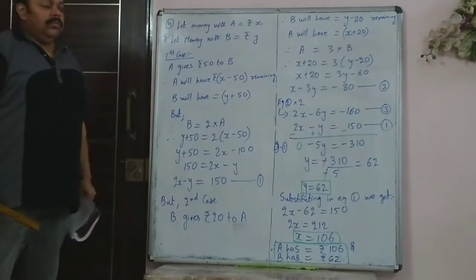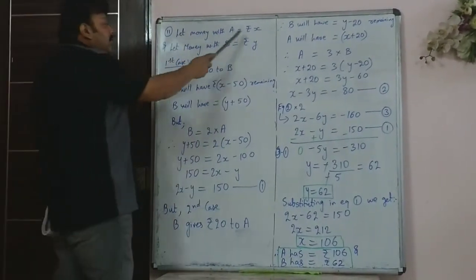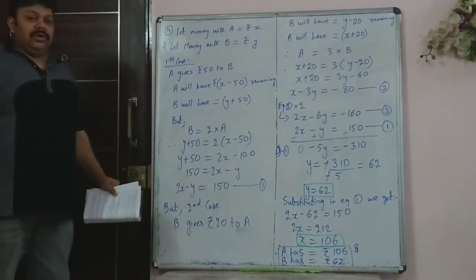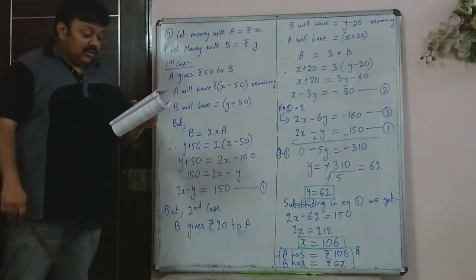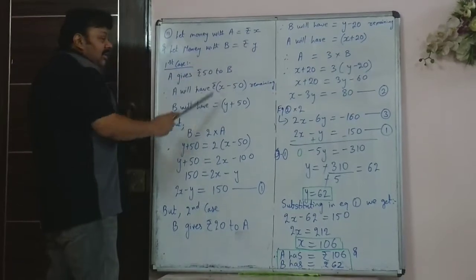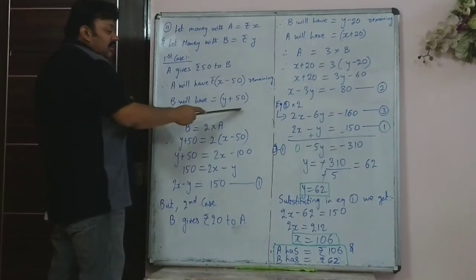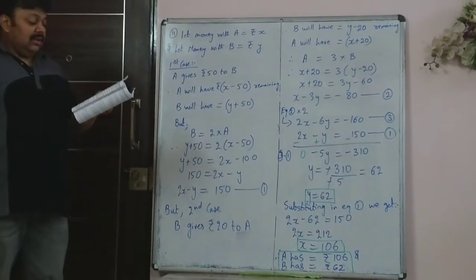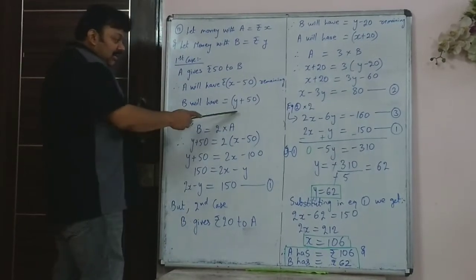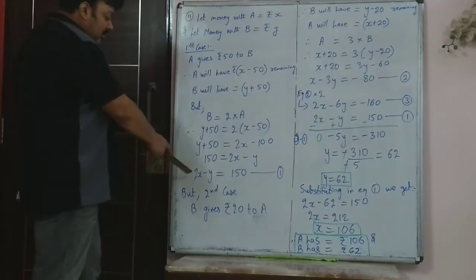Now consider the 11th sum. Each one, A and B, has some money. Let A have rupees x and B have rupees y. If A gives rupees 50 to B, then A will have x minus 50 and B will have y plus 50. It is given that B will have twice the money as what is left with A. So y plus 50 equals 2 times (x minus 50). When you solve this equation, you get 2x minus y equals 150.